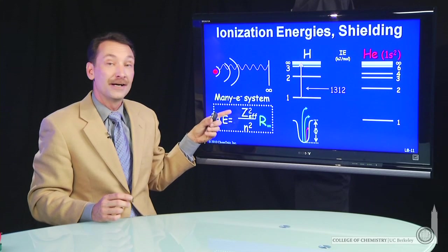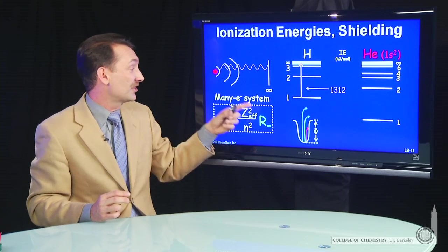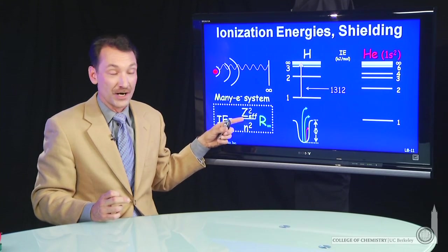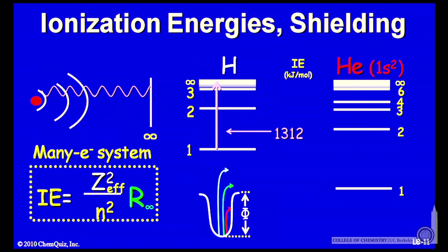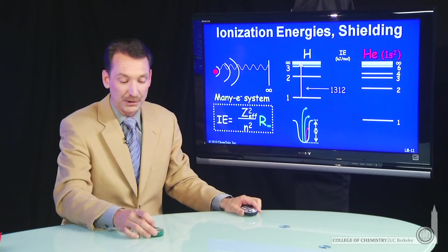Now, the ionization energy is given by the effective charge squared over n squared. Now, the effective nuclear charge is the amount of charge that the electron can actually see.